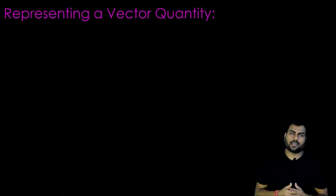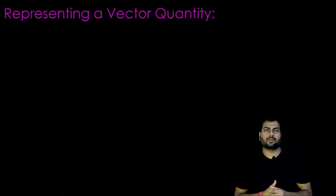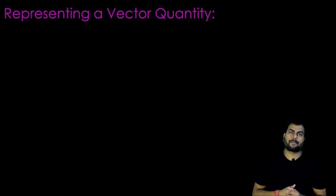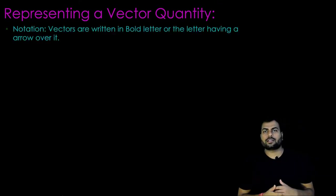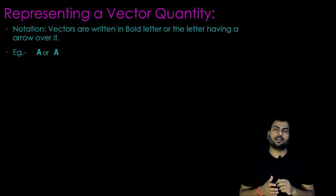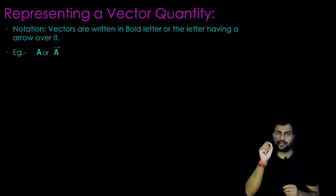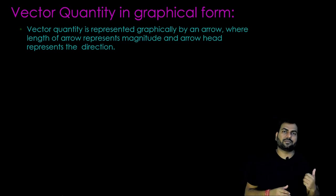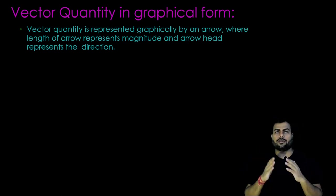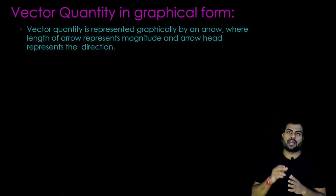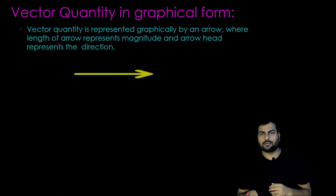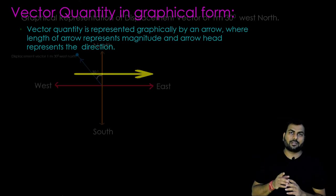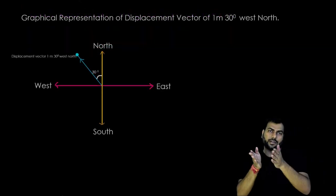Now we will see how to represent a vector quantity. Vector quantities are either written in bold letter or letter having an arrow over it. Graphically, a vector quantity can be represented by an arrow where length of the arrow represents magnitude and the arrow head represents the direction.